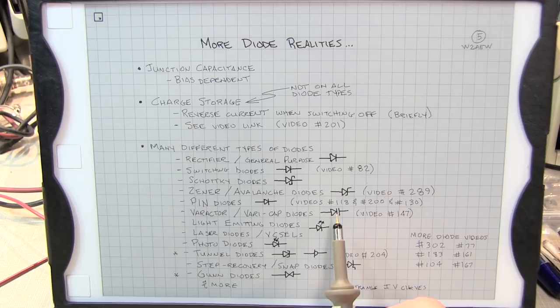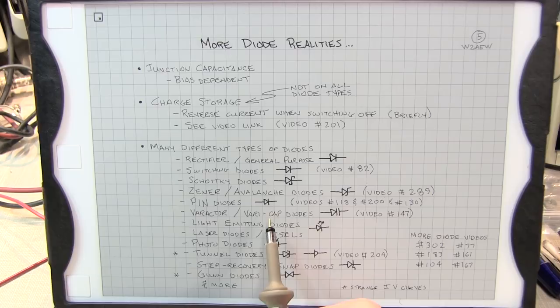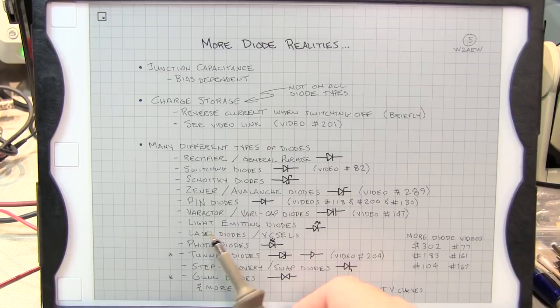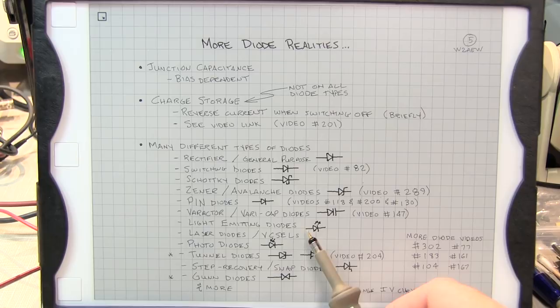Now of course a varactor diode is one example where we're not really ever forward biasing the diode. We're just varying the reverse bias to change the diode capacitance. Now of course there are optical diodes such as light emitting diodes or laser diodes or even vertical cavity surface emitting lasers or VCSELs. Now the symbol typically looks like a regular diode with some arrows coming off it to indicate that they're illuminating.